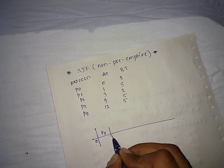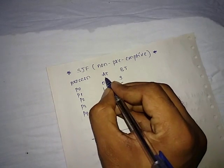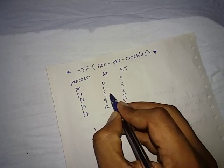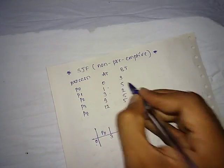Now again check, is there any process from zero to three with arrival time? Yes, there are some processes, that is P1 and P2. So the P1 and P2 processes - P1 coming at 1 with burst time 5, and P2 is coming at 2.